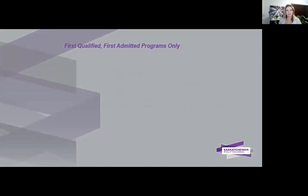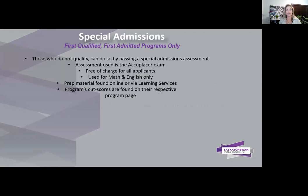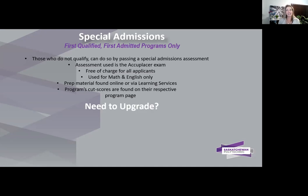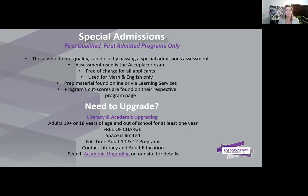Some first qualified, first admitted programs have special admissions if you don't meet the academic requirements — that will be listed on the respective program web page. This applies to math and English subjects, not English language proficiency. If you find you don't have the subjects required, you may want to consider upgrading. We have academic upgrading that is free of charge through Saskatchewan Polytechnic — search 'academic upgrade' on our website for details.